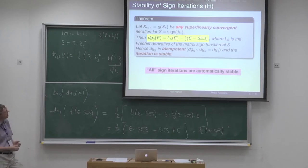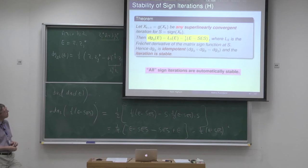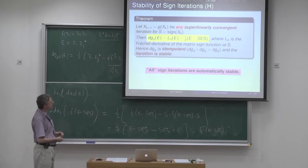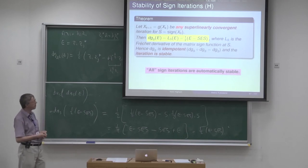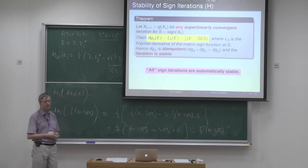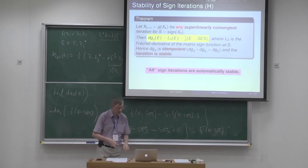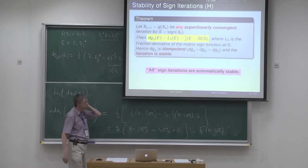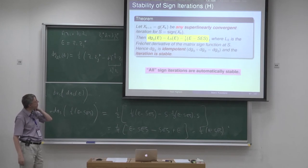The last part of the theorem says the iteration is stable. Why? If a function is idempotent, then all its powers are equal to the function itself — so the powers are trivially bounded. An idempotent function certainly has bounded powers. What's nice about this result is it doesn't just apply to the Newton iteration — it applies to essentially any sign iteration anyone has ever derived. Any sign iteration is automatically stable by this analysis. All the sign iterations have the same Fréchet derivative at the limit point.